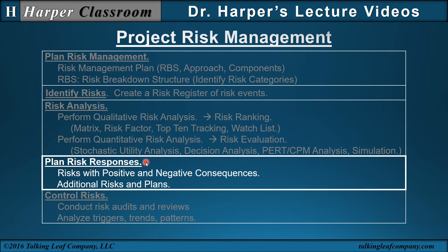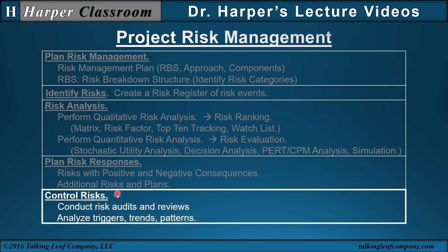In plan risk responses, we consider risks with positive and negative consequences, with different responses depending on consequences. We also include secondary risks and contingency plans. Control risks: conduct risk audits and reviews to ensure the risk plan in place is effective. This process also analyzes triggers, which are events; trends, which are sequences of events; and patterns, which are environmental.